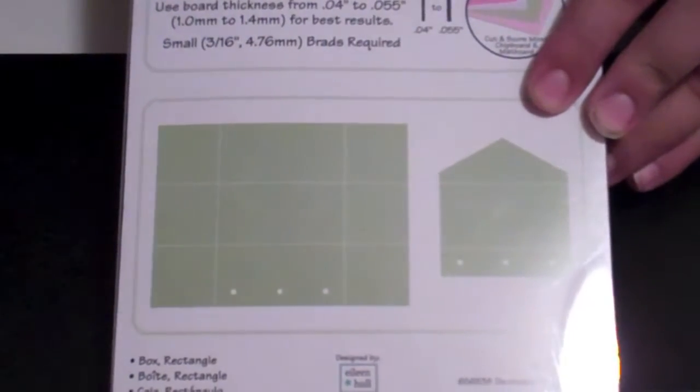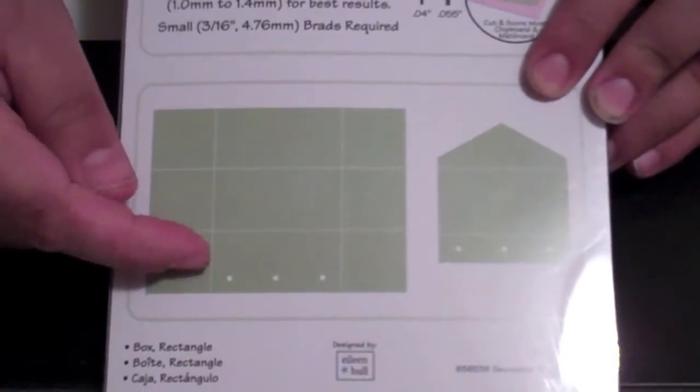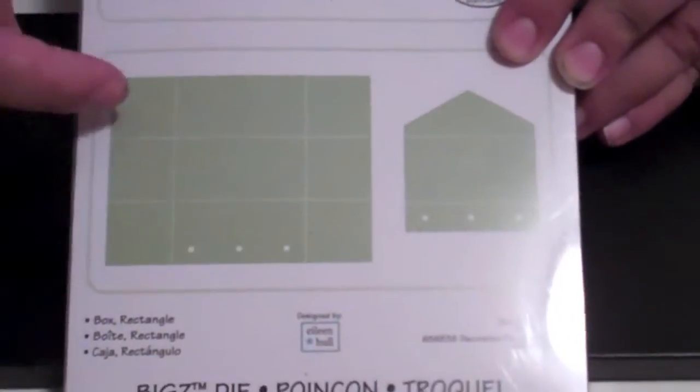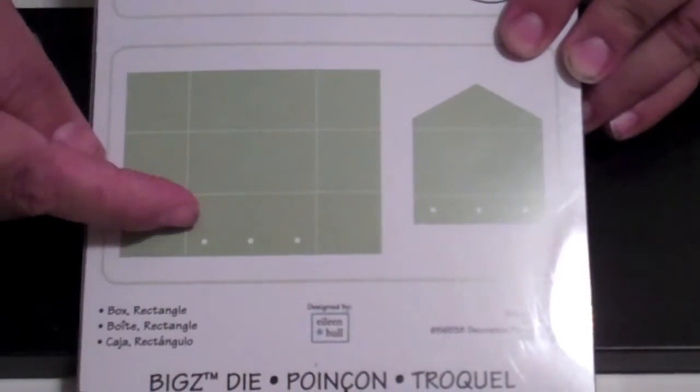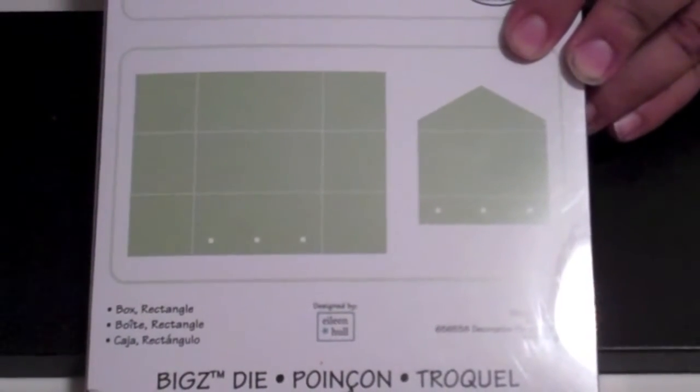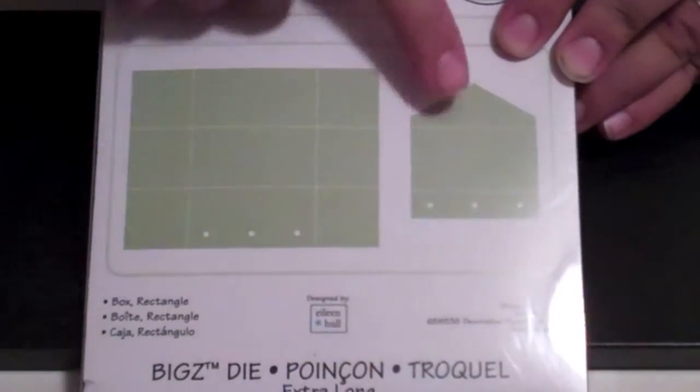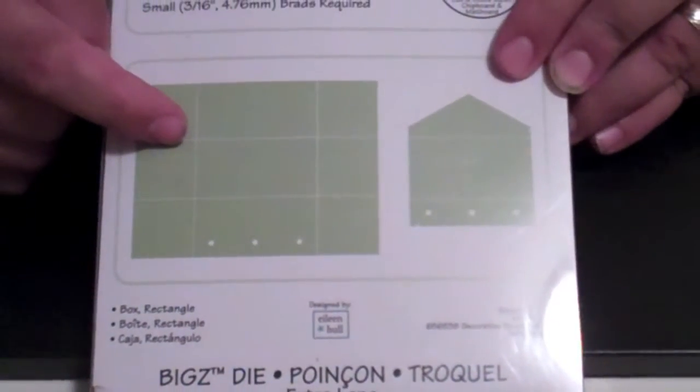Now the concept behind the scoreboard dies is that it will cut your die out, and then on these lines, some lines it will cut and some lines it will score. And then with this one, you'll just go ahead and piece it together to make the flap.